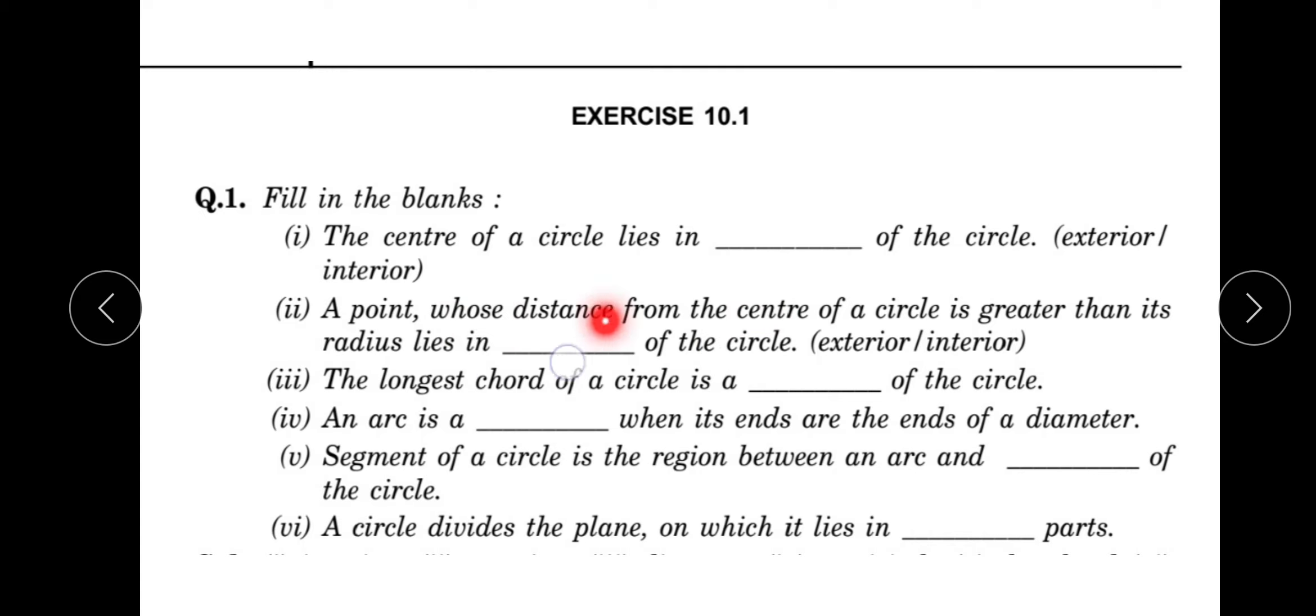a circle is greater than its radius lies in blank of the circle. The point whose distance from the center of a circle is greater than its radius lies in the exterior of the circle.